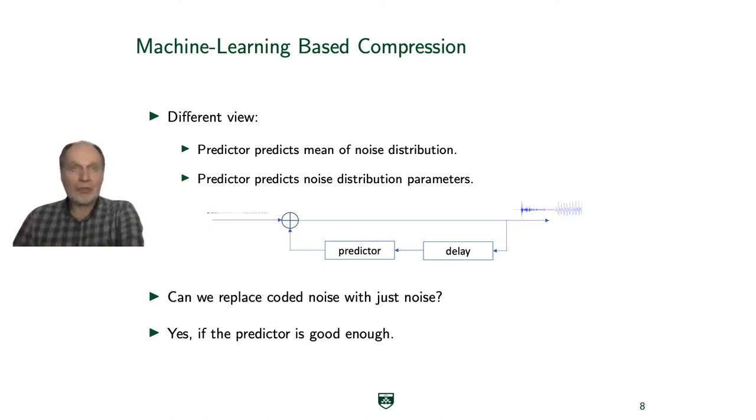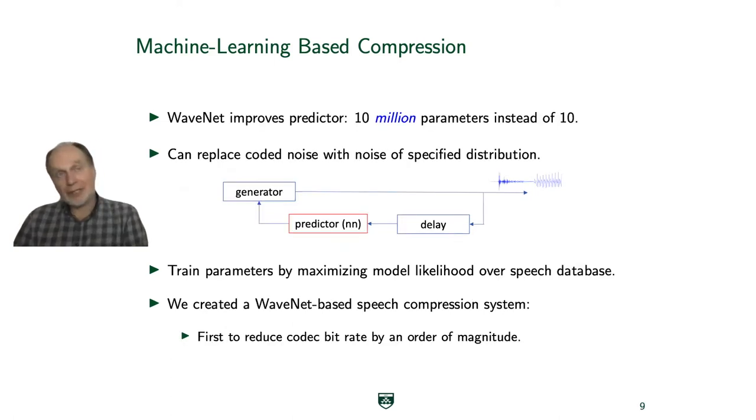We then use a more sophisticated machine learning based method to build this predictor. Then we can build a very good sounding system. This is the principle of WaveNet, which is a much more complicated model than the models in your phone. We now use 10 million parameters instead of just 10. We can synthesize a signal that sounds almost exactly the same as the signal that was transmitted from the far end.